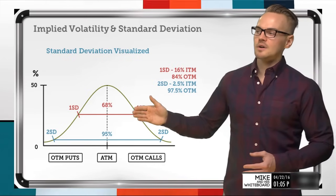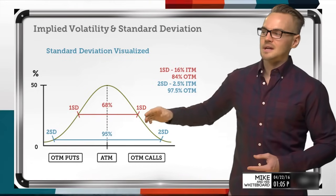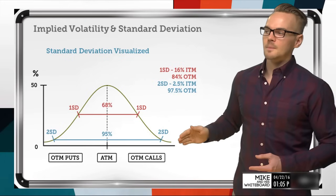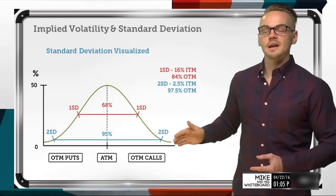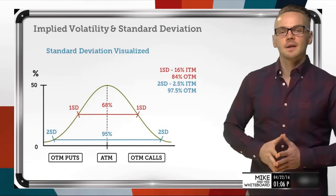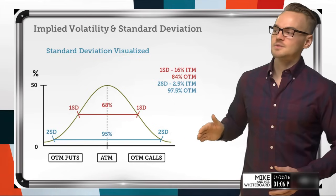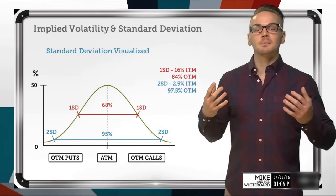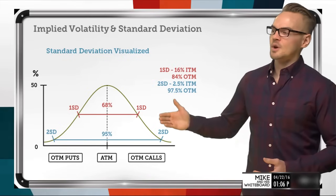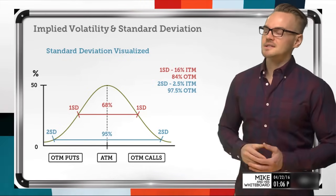We're going to have a lot more occurrences within the one standard deviation range than on that outside range. The further and further we go above or below where the stock price is currently trading, we get to those outlier moves — and even further than that is what we would consider a black swan event or tail risk. These are the different ranges.